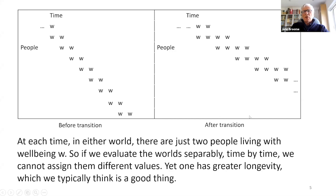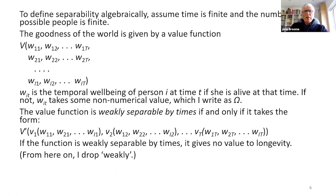If we try to assess these two situations comparatively in a separable fashion, we won't get the right conclusion. Looking at the world before transition time by time, at each time you've got two people living with a well-being of W — and that's exactly the same after the transition. So if we assume the valuation can be made time by time, we will have to think they have the same value. But that's what we don't think: we think it's better to have people living longer. A separable valuation misses the crucial point of the value of longevity.